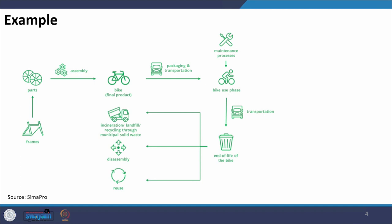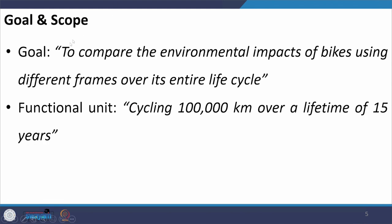Now we will conduct a comprehensive example — modeling a bicycle. We need to model the process blocks for the production and disposal of a bicycle. A bike consists of frames, various parts — this would be the assembly stage — then packaging and transportation, maintenance processes in the use phase, and then the disposal phase: incineration, landfill, disassembly and reuse. The goal is to compare the environmental impacts of bikes using different frames over its entire life cycle, with the system boundary defined as cradle to grave.